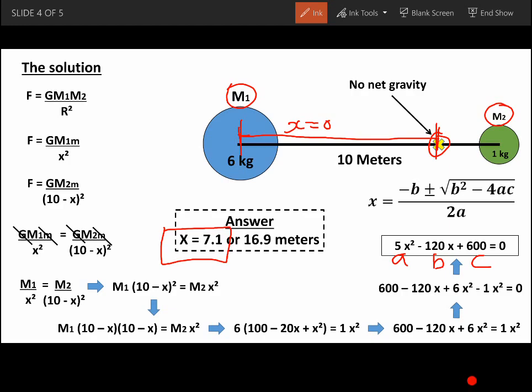But we only want the distance between the 10 meters. So now we have X, this distance here, equals 7.1 meters.